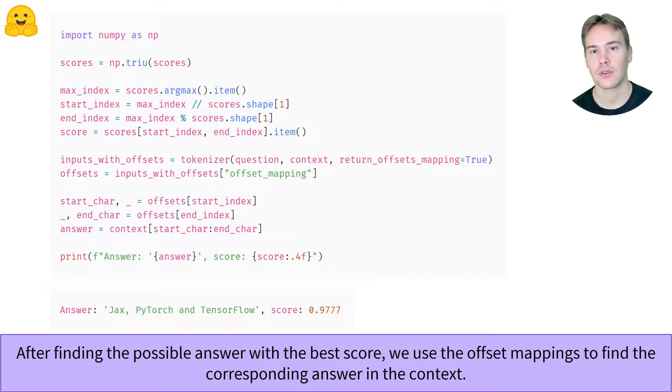Once we have the start and end position for the tokens, we use the offset mappings provided by our tokenizer to find the span of characters in the initial context, and we get our answer.